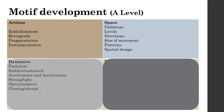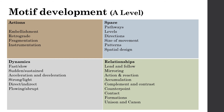Moving on to dynamics: contrasting your dynamics is really simple. It could go from fast to slow, or you could change the dynamics completely — maybe from a flowing dynamic to a sudden dynamic. Really play with speed and flow. Finally, relationships — there are tons of them and I'll create another video going into detail. To refresh your memory: lead and follow, mirroring, action-reaction, accumulation, complement and contrast, counterpoint, contact, formations, unison, and canon. With a group choreography, you can use lots of relationships with multiple dancers.